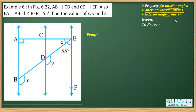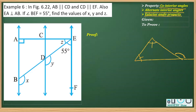Finally, the exterior angle property: in a triangle, if you produce one of its sides, the exterior angle will be equal to the sum of its two interior opposite angles. Let's see how this property is used in solving these questions.